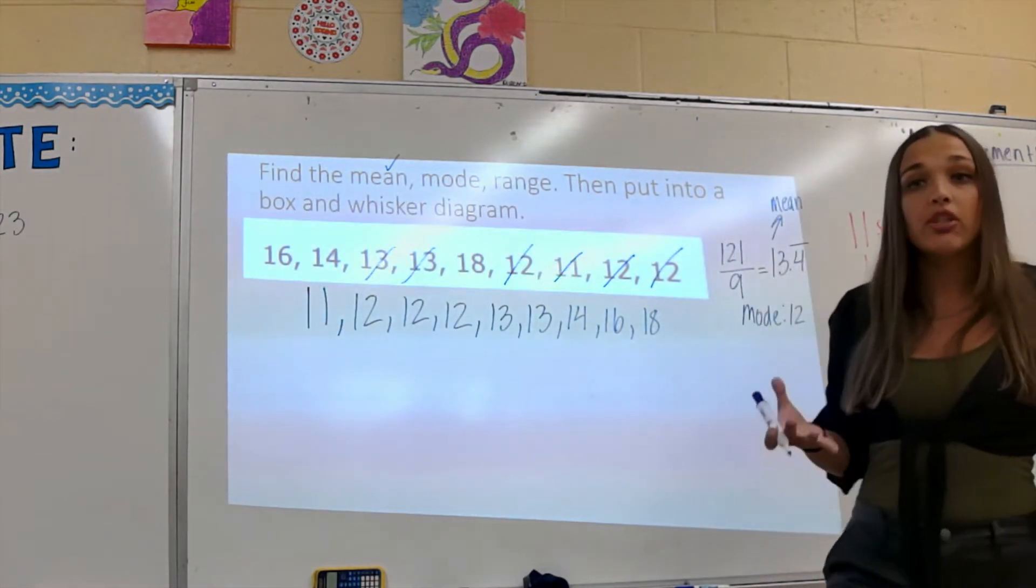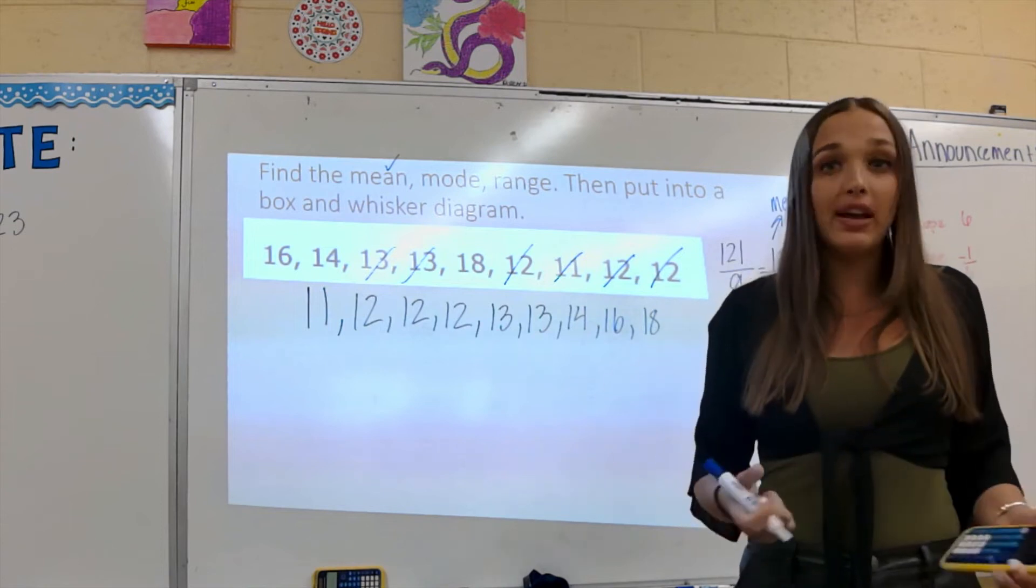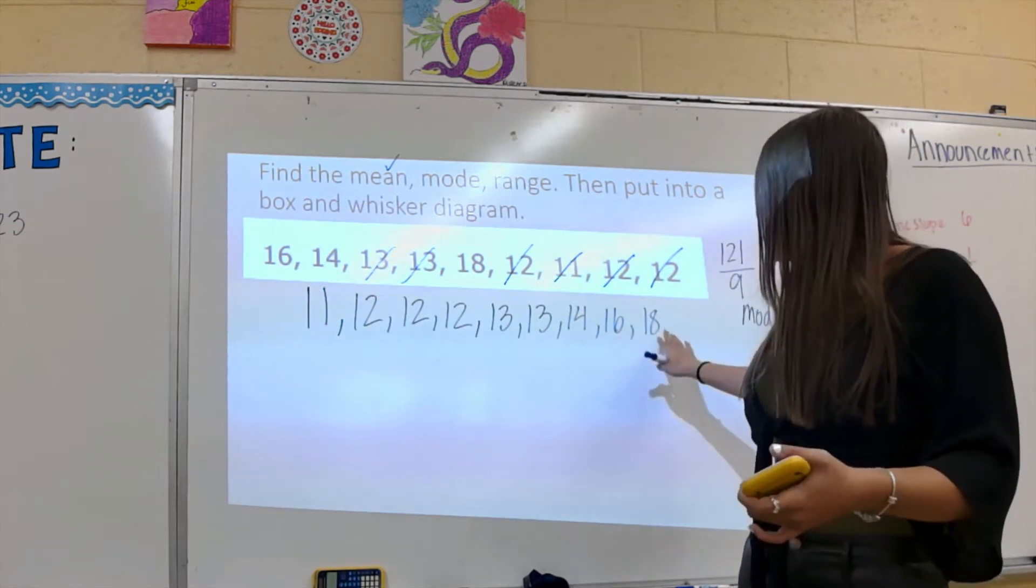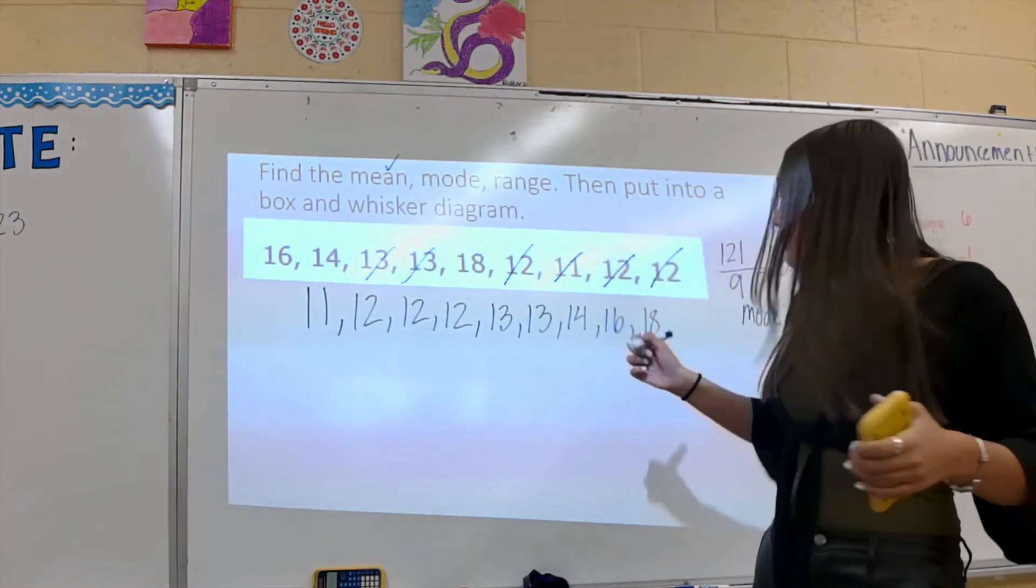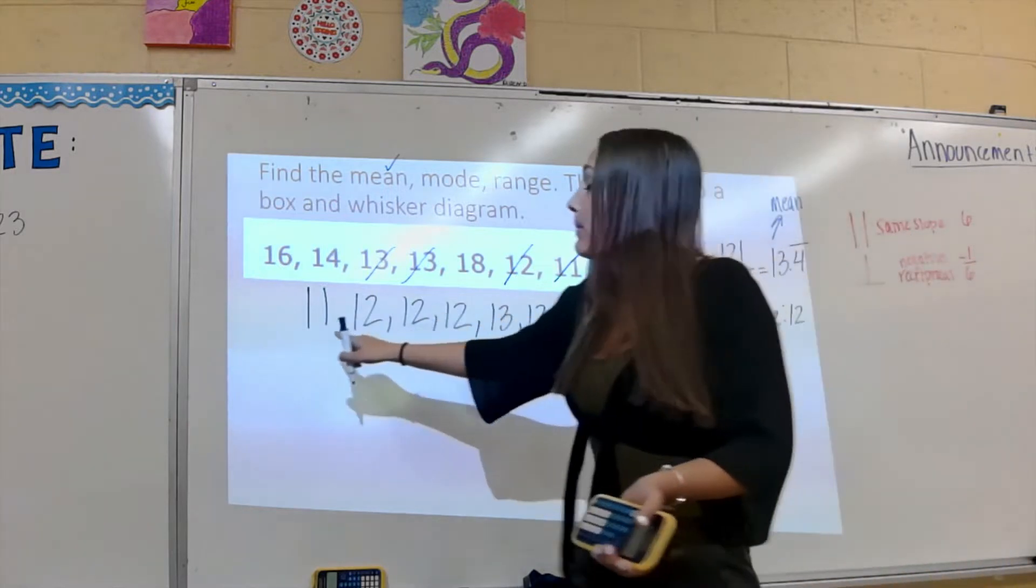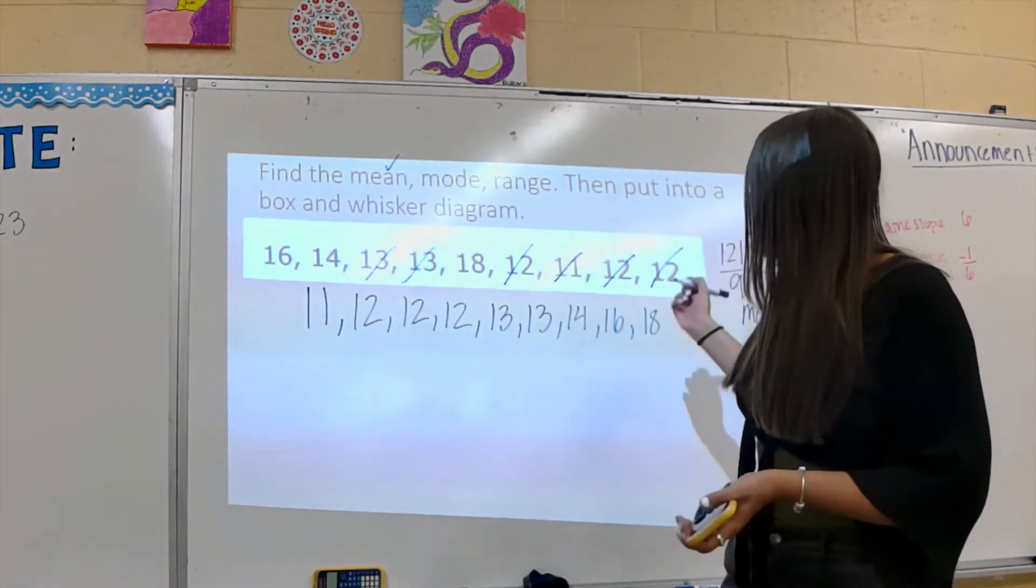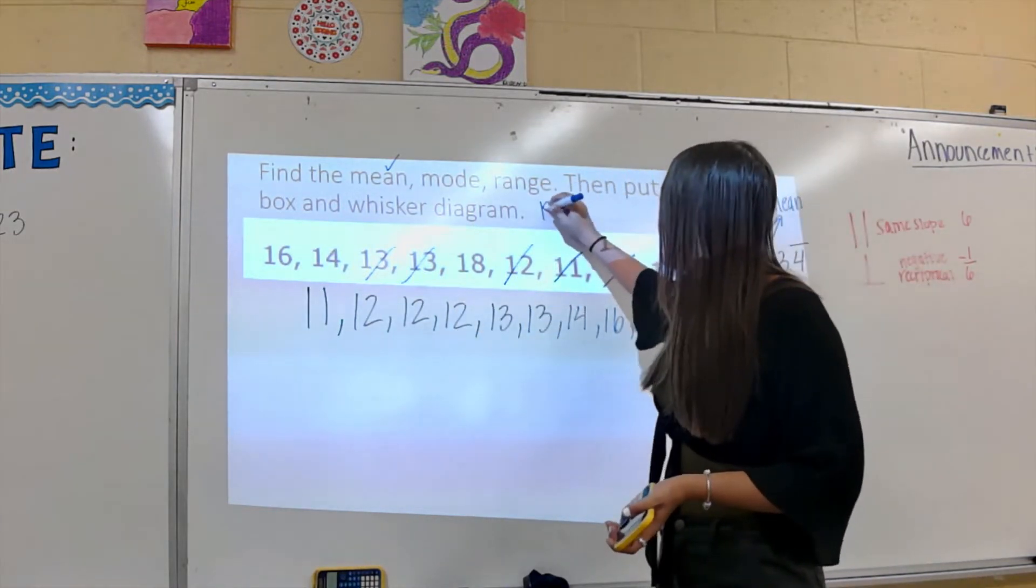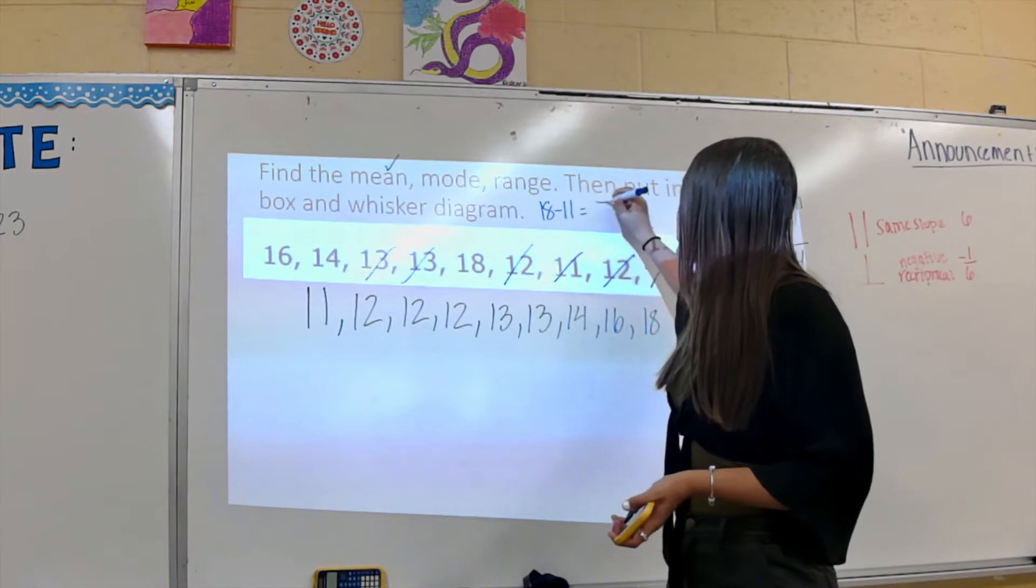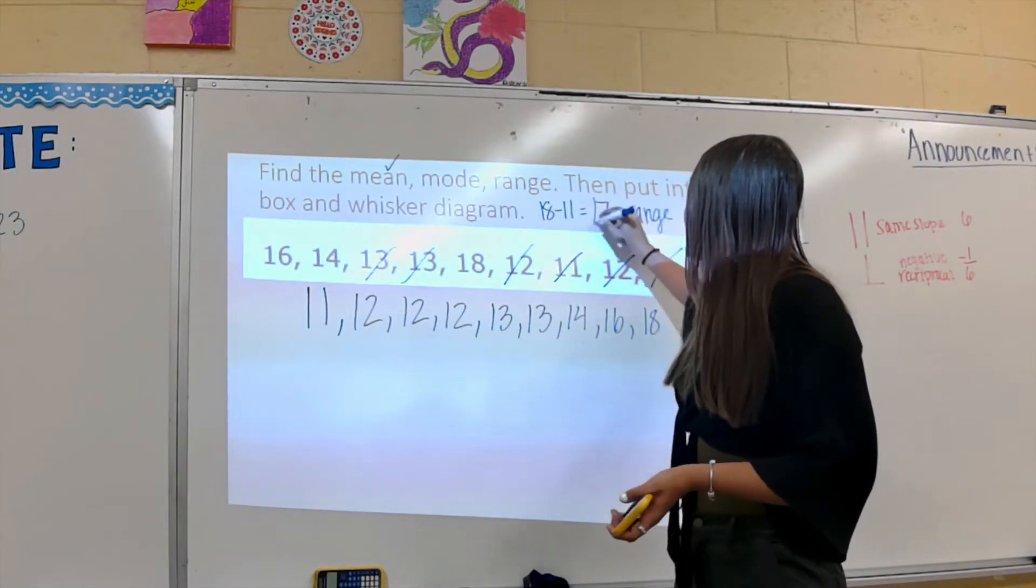Now we want the range. The range is where I take my smallest number or my least value and my greatest value and subtract. So 18 is my greatest value or my maximum, 11 is my minimum or my least value, and I'm going to subtract them. So for my range, I do 18 minus 11, which is 7. My range is 7.